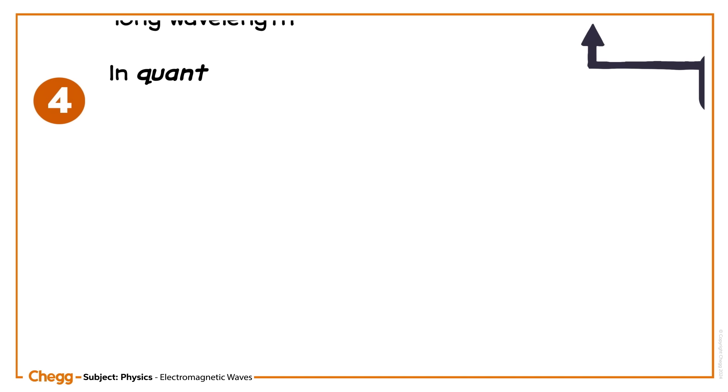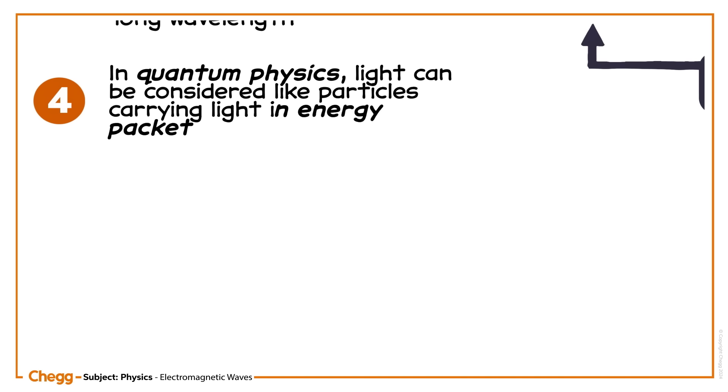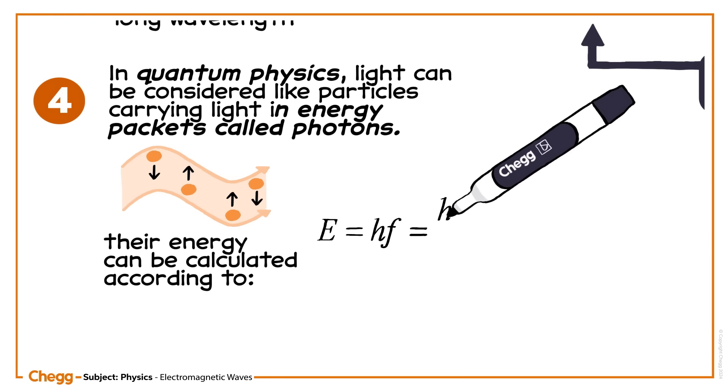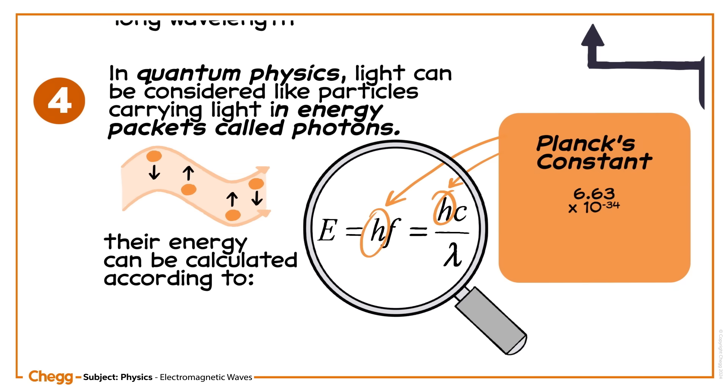In quantum physics, light can be considered as particles carrying energy in packets called photons. The energy of each photon in an electromagnetic wave can be calculated according to the equation E = hf, where h is Planck's constant with a value of 6.63 × 10^-34 joules per second.